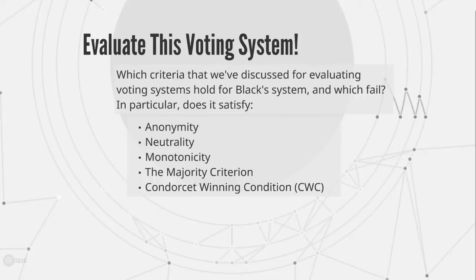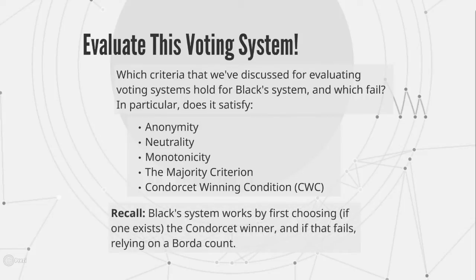As a reminder, Black's system essentially goes through and chooses the Condorcet winner if it exists, and if no Condorcet winner exists, we do a Borda count on everyone's preference orders. By definition, because if a Condorcet winner exists we select it, we satisfy the Condorcet winning condition. Similarly, because we're only doing this based on head-to-head contests to determine Condorcet winners, or the Borda count which we know satisfies anonymity, this system has to satisfy anonymity.